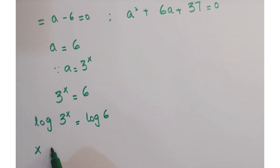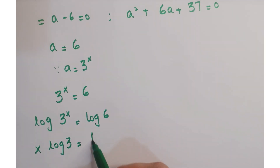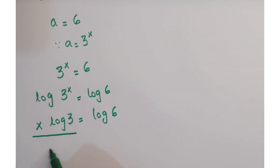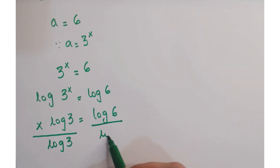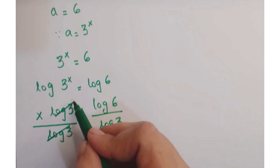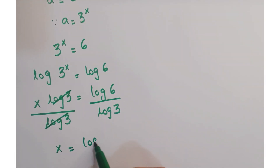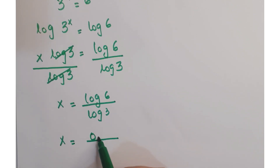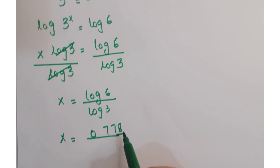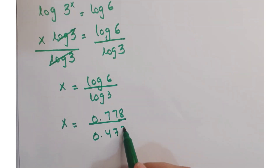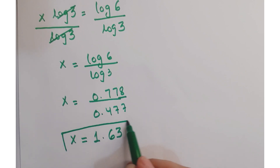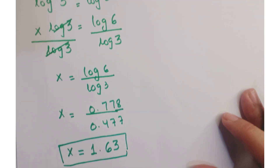Taking log of both sides, we get x times log of 3 is equals to log of 6. Dividing both sides by log of 3, we get x is equals to log of 6 upon log of 3. Putting in the values from the calculator, log 6 upon log 3, after simplification we get x is equals to 1.63.